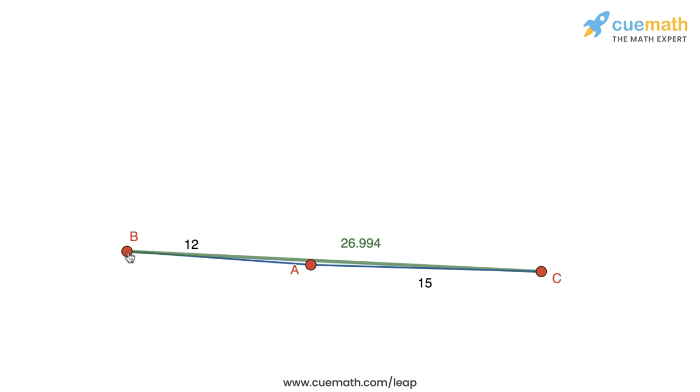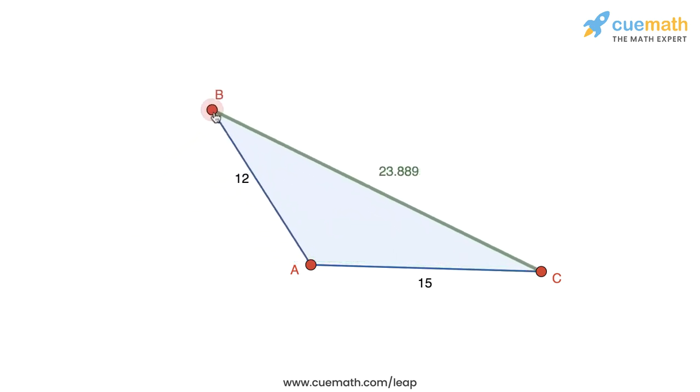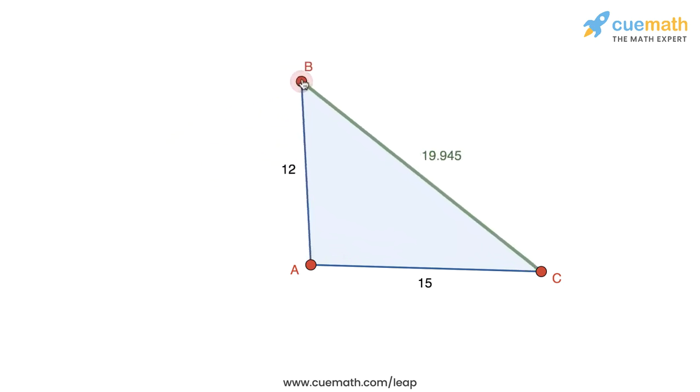On the other hand, if I decrease the angle at A like this, we see that BC decreases, and it continues to decrease till angle A is almost 0 degrees like this.